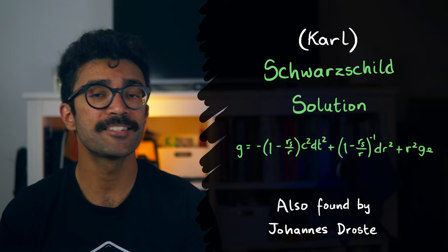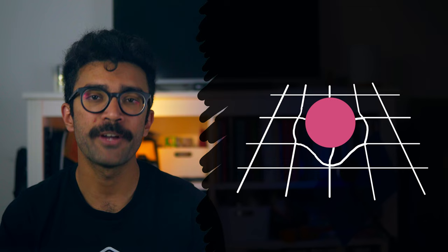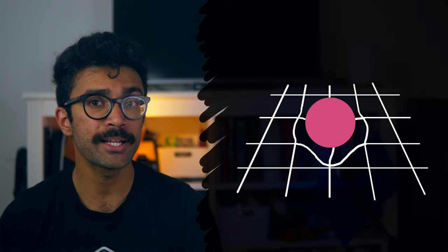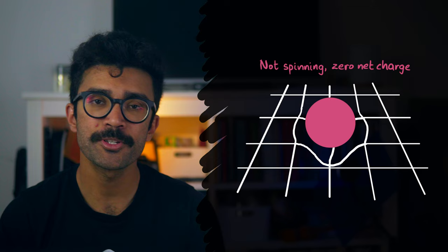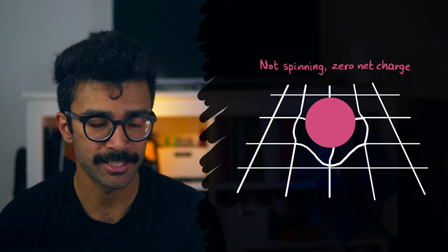This solution deals with how space-time is warped specifically around a spherically-shaped object that has mass. But importantly, this solution was found so quickly because Schwarzschild and Drost considered the very simple scenario of a sphere in space-time. It could not be spinning, nor could it have a net charge. And it also assumed that the space-time by itself was flat. If you want to know what that means, then please check out my video on the Einstein field equations. Basically, they just considered a very simple spherical object and tried to find out how its mass warps the space-time around it.